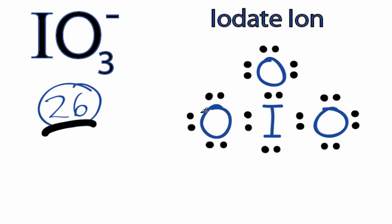However, when we look at this structure, iodine is below period 2 on the periodic table. That means iodine can have an expanded octet — it can have more than eight valence electrons. So we really need to look at the formal charges here to see if this is the most likely structure for IO₃⁻.